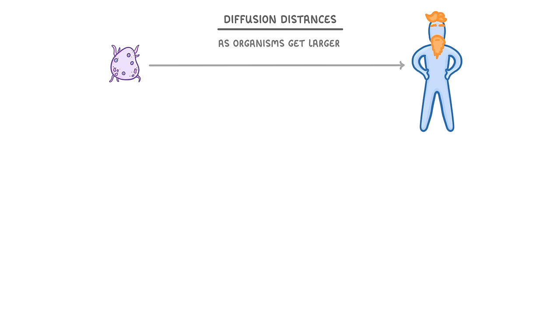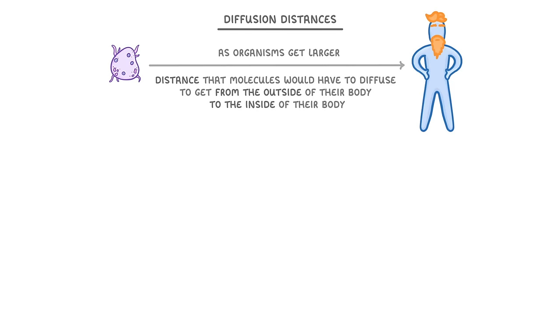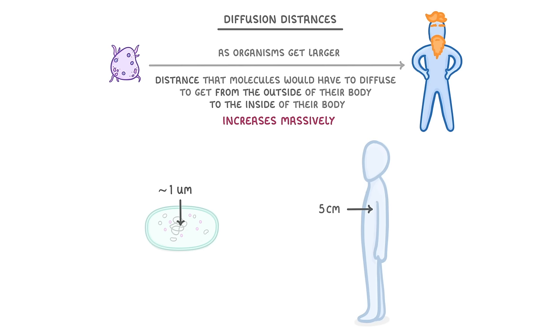Now another important concept to bear in mind here is diffusion distances. As organisms get larger, the distance that molecules would have to diffuse to get from the outside of their body to the inside of their body increases massively. For example, to get from the outside to the middle of a bacteria is probably only something like 1 micrometer, whereas to get from the surface to the middle of a human would be at least 5 centimeters, which means molecules would have to diffuse 50,000 times further.